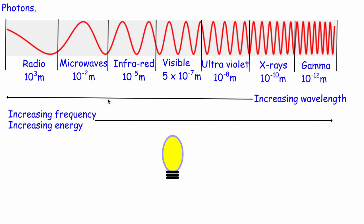All waves carry energy, and electromagnetic waves are no different. Radio waves are not dangerous whereas gamma rays are, because radio waves have a very low energy whereas gamma rays have a very high energy. So we have increasing energy as we travel from radio waves to gamma rays, and we can link frequency and energy together — a high frequency electromagnetic wave also has a high energy.